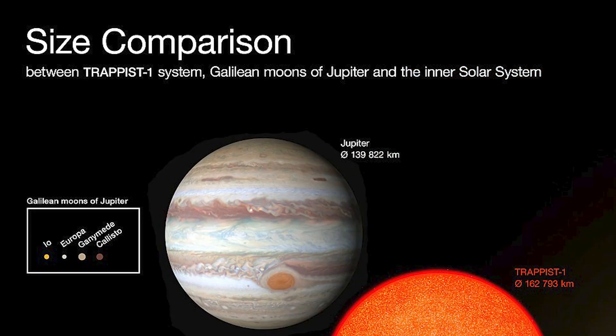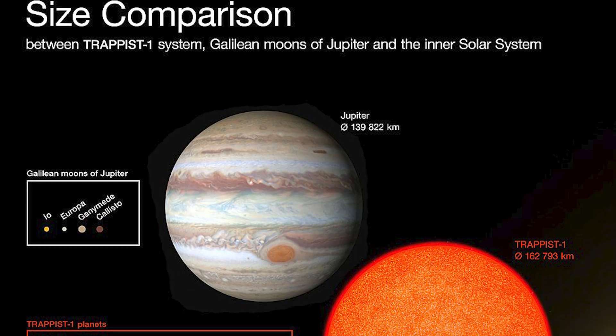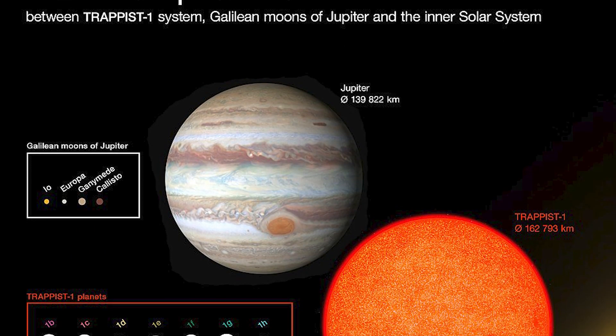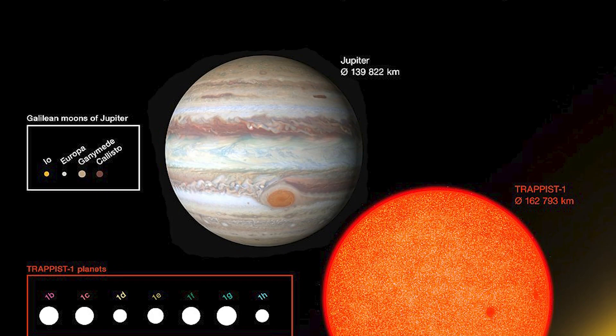So why does our system have life? What makes it so special? The Trappist-1 system was a massive discovery in the scientific community. To think there was a system with seven rocky Earth-like worlds.